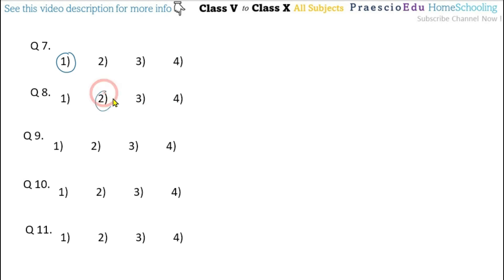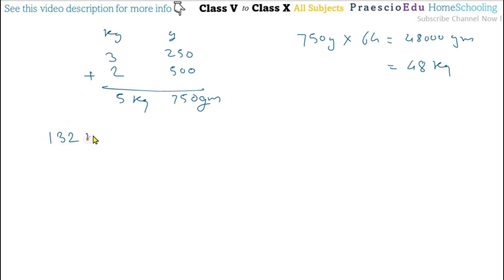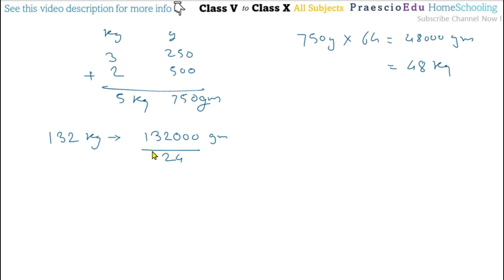Question number 9: If 132 kg of wheat is distributed equally among 24 persons, how many grams will each person get? First convert 132 kg to grams: 132,000 grams. Then divide by 24 to get each person's share in grams. After this division you get 5500 grams, given in option number 4.